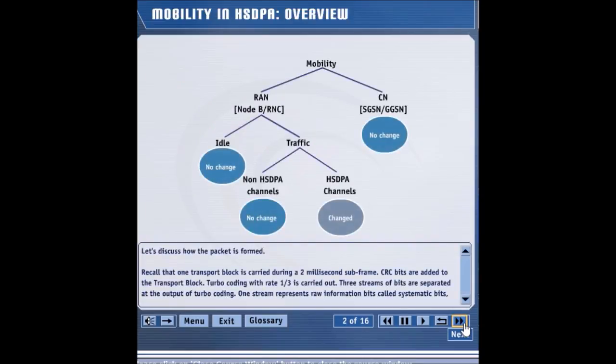In general, there are two types of mobility: RAN mobility and core network mobility. RAN mobility involves mobility across node Bs and RNCs, while core network mobility involves mobility across SGSNs and GGSNs. HSDPA does not influence core network mobility. RAN mobility could be in the idle mode or in the traffic mode. Idle mode RAN mobility remains the same, while the traffic mobility is affected only for the new HSDPA channels.